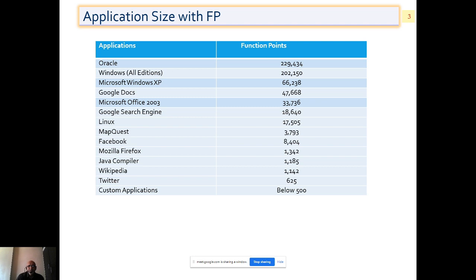Moving next, have a look at Google search engine, it was around 18,640. Just have a look at Facebook: 8,404. Have a look at Mozilla Firefox. Twitter is even lesser than everything else. Custom applications are below 500. Now you are building custom applications, so your FPs will be below 500, maybe 100 or maybe 200. This is the entire list which suggests what kind of function points are available.